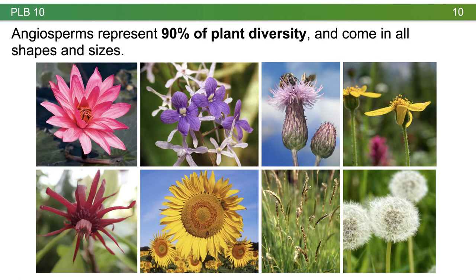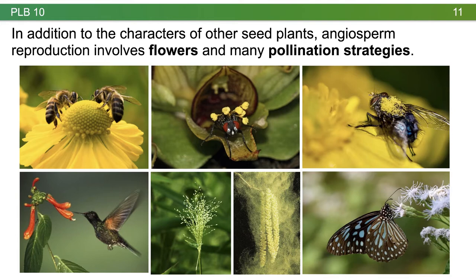In addition to the characters of other seed plants, angiosperm reproduction involves flowers and many different pollination strategies. They make both seeds and pollen, but angiosperms are most famous for their association with specific pollinators. Insects are the most famous — bees, flies, beetles, butterflies, and moths are really important pollinators — but there are non-insect pollinators as well, most notably hummingbirds and bats. However, keep in mind that many angiosperm species are wind pollinated, such as grasses and corn.